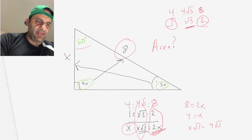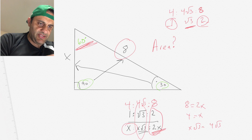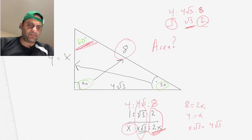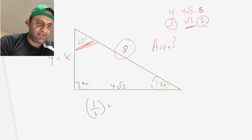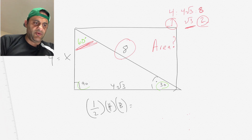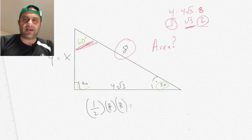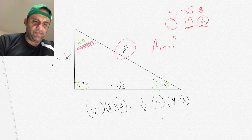Now, importantly, the 60-degree angle opposes the middle side, which is 4 square root of 3, and the smallest side is 4. The area of the triangle is one-half times height times base. The reason it's one-half is because a full rectangle would be height times base, but a triangle is half of that. So: one-half, and the height is 4, and the base is 4 times the square root of 3.